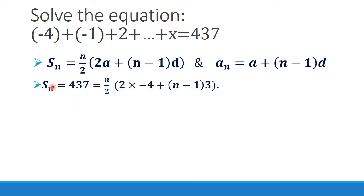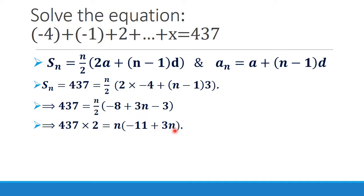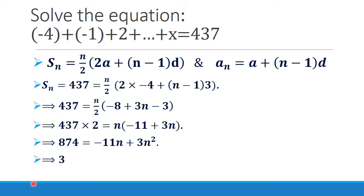Solving this equation to find n: 437 equals n by 2 into minus 8 plus 3n minus 3. That gives minus 8 minus 3 equal to minus 11, so 437 times 2 equals n times minus 11 plus 3n. This gives 874 equal to minus 11n plus 3n squared, which implies 3n squared minus 11n minus 874 equal to 0.